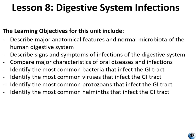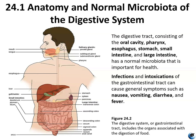The learning objectives for this lesson include describing the major anatomical features and normal microbiota of the digestive system, signs and symptoms of infections of the digestive system, major characteristics of oral disease, and common bacterial, viral, protozoal, and helminthic infections of the gastrointestinal tract.